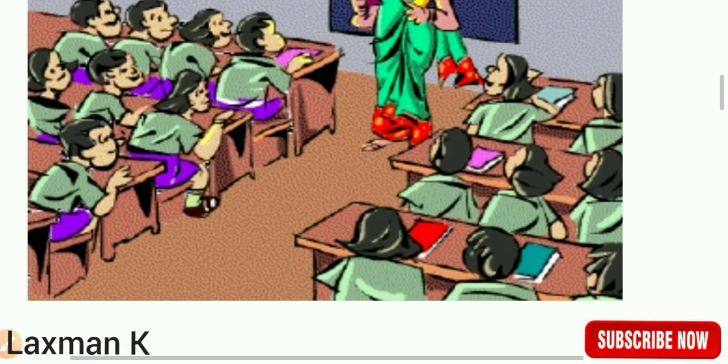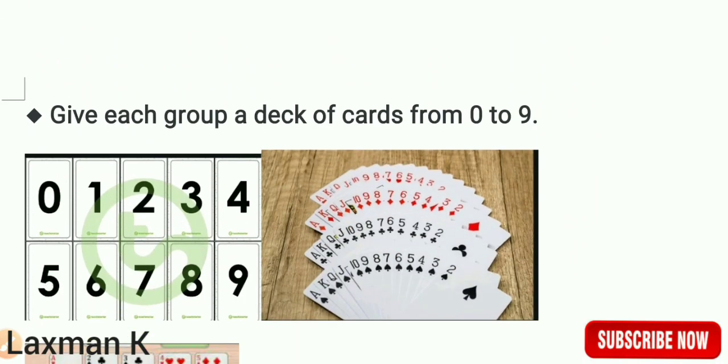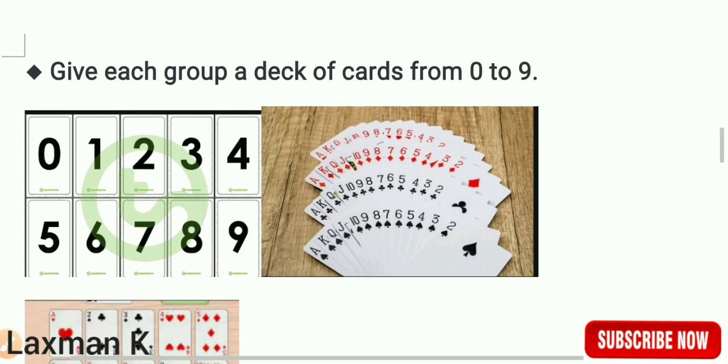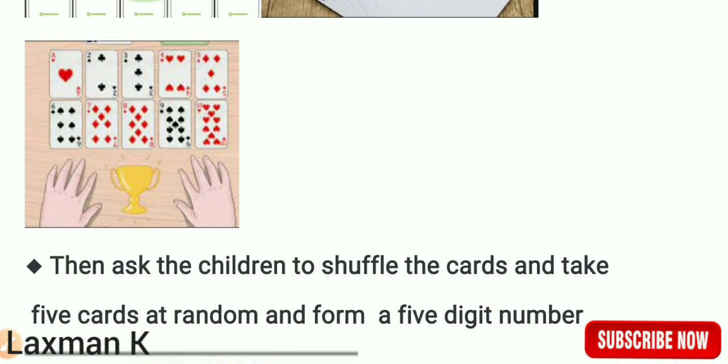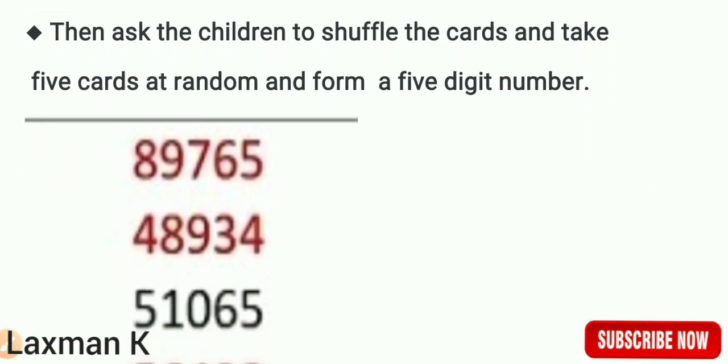Give each group a deck of cards from 0 to 9. Then ask the children to shuffle the cards and take five cards at random and form a five-digit number.